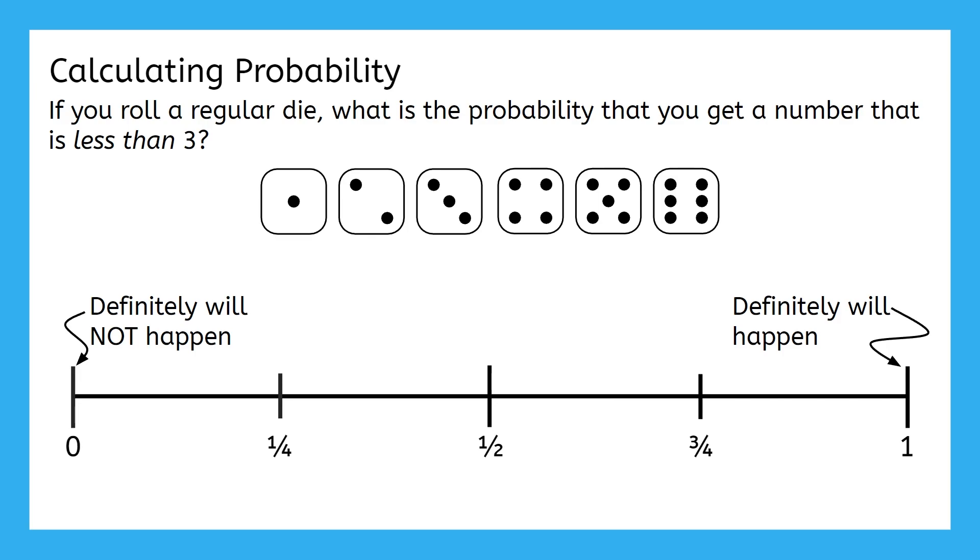The probability of rolling a number less than 3 is definitely not 0, because it totally can happen. For instance, I could roll a 2. And it's definitely not 1, because it might not happen. For instance, I could roll a 5.